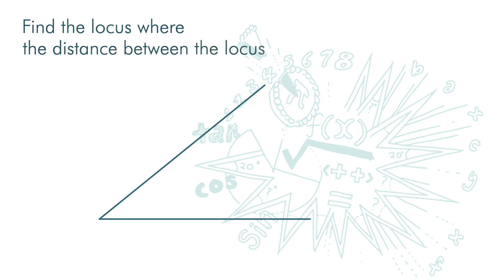Let's look at an example. Here, we have two intersecting lines, and we want to find the locus where the distance between the locus and the two intersecting lines are equal.